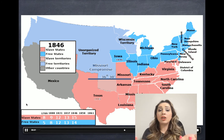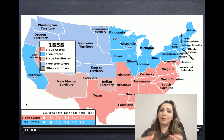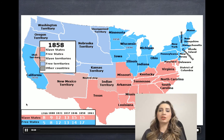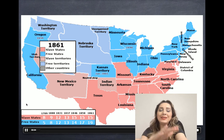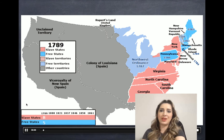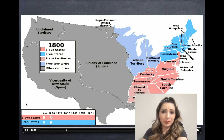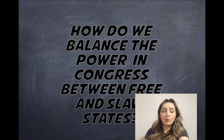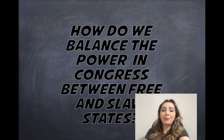What you'll notice in the next compromises is America trying to keep that balance — lower the tension, put a band-aid over an open wound. That's what they're trying to do, but eventually it's not going to hold. So the question is: how do we balance the power in Congress between free and slave states?